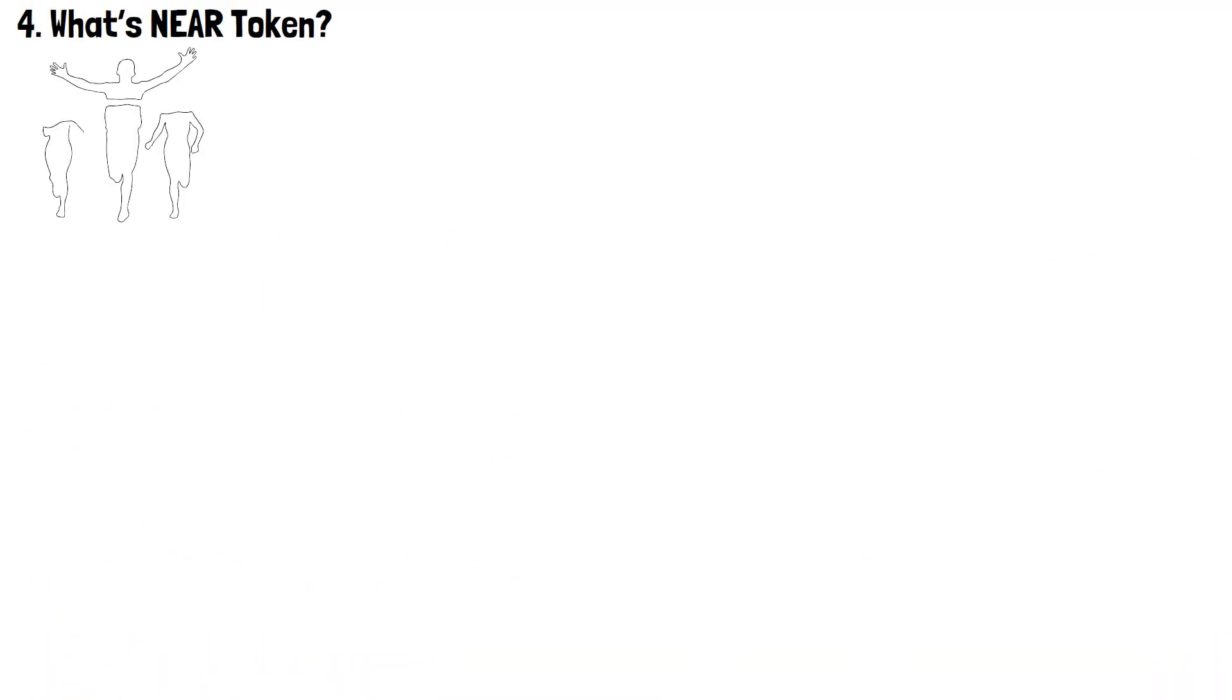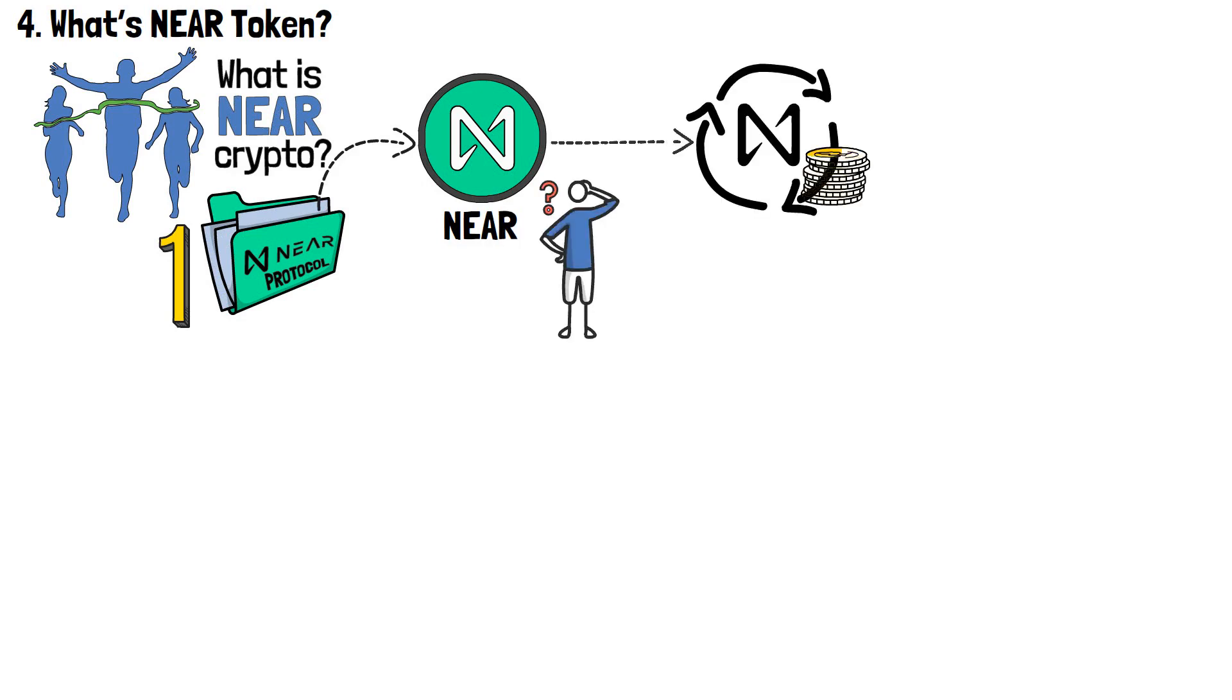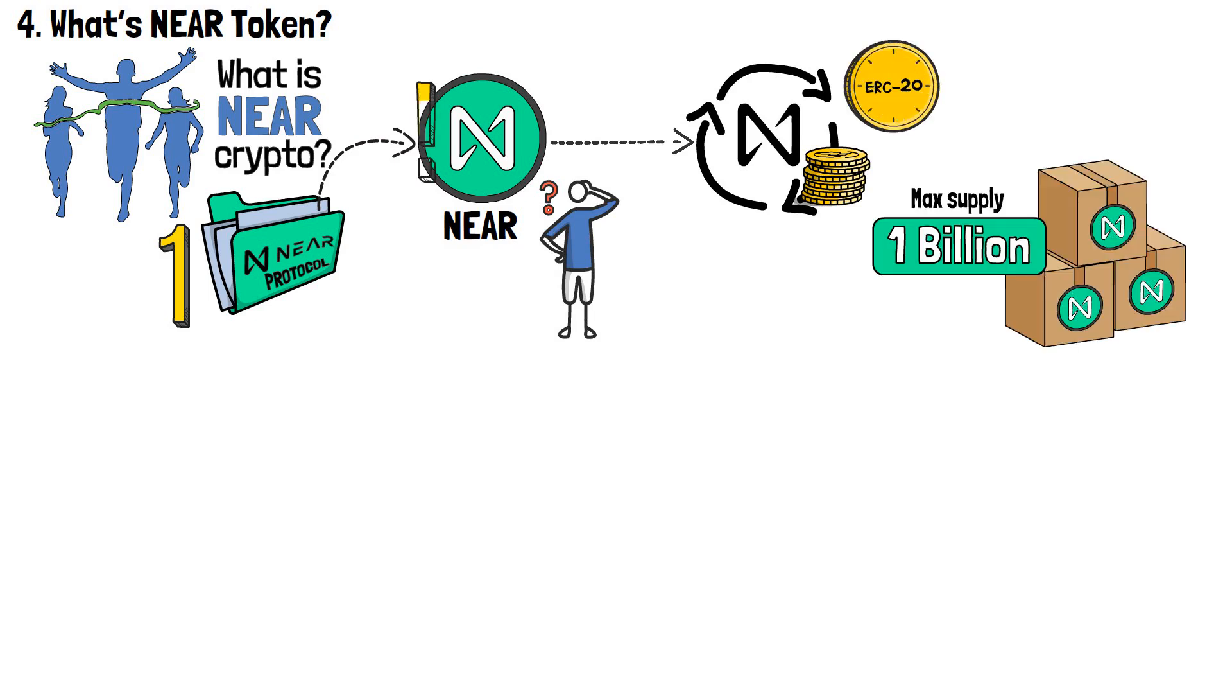By now, we have almost finished answering the question of what is NEAR protocol in crypto. But there's one more variable that awaits our addressing. It's the self-titled NEAR protocol token. What is it? NEAR serves as the native token within the NEAR ecosystem. Operating as an ERC20 token with a max supply of 1 billion, NEAR plays a crucial role in facilitating network operations. It acts as the means for settling transactions and storage fees on the platform.